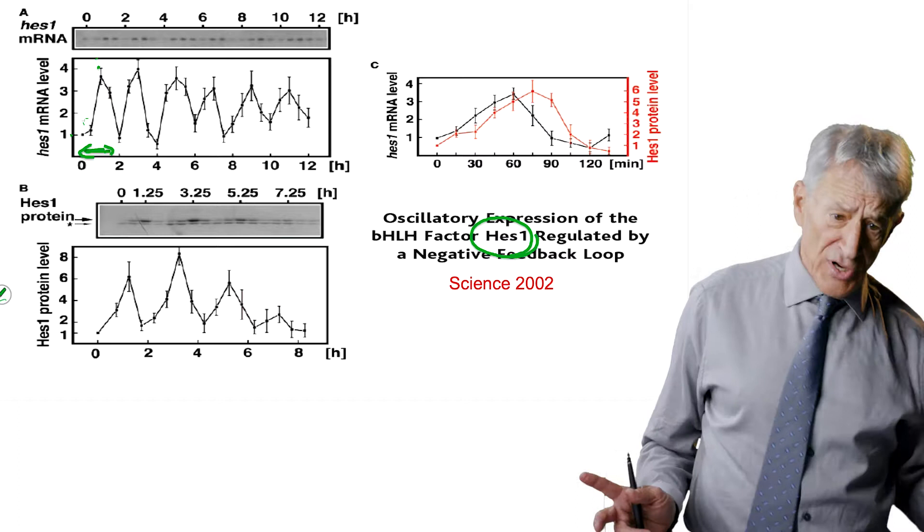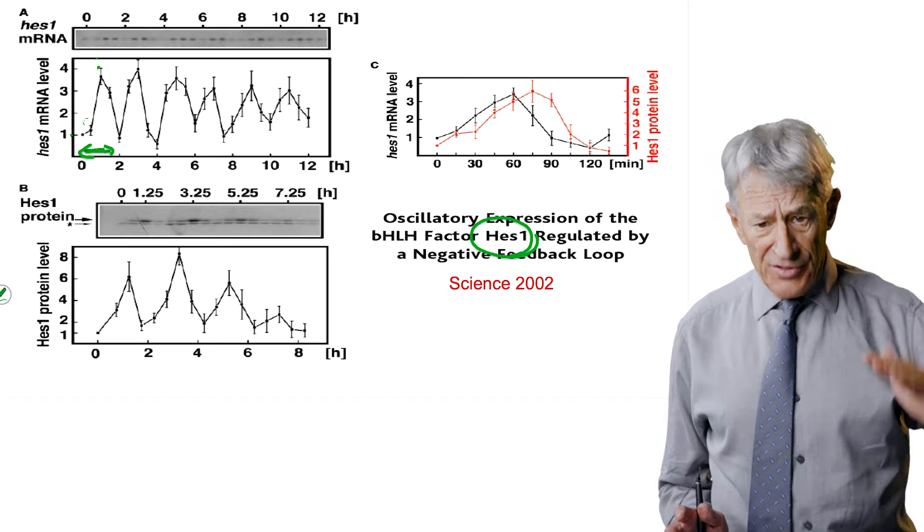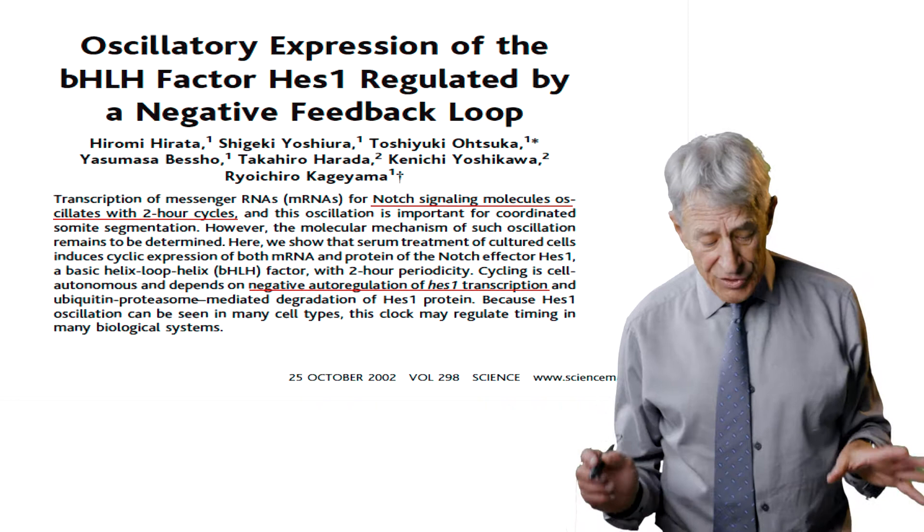So what could possibly cause an oscillatory gene expression? We have been talking about a bistable gene expression produced by a positive feedback loop. What produces oscillatory responses? And the short answer is a negative feedback loop. And that's going to be our next topic.